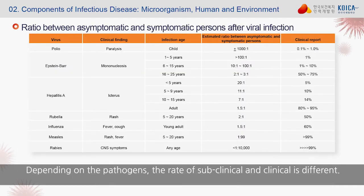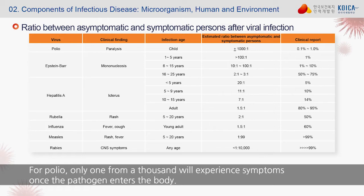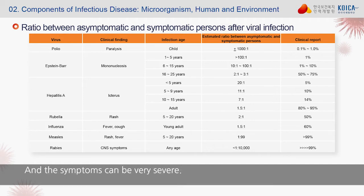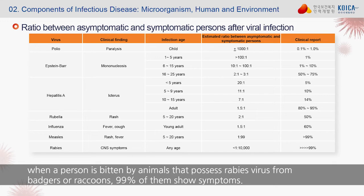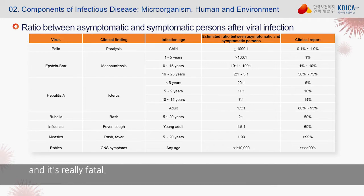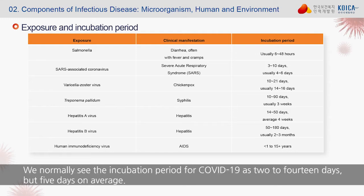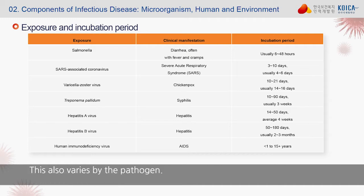Depending on the pathogen, the rate of subclinical to clinical infection differs. For polio, only 1 in 1,000 will experience symptoms once the pathogen enters the body, and those symptoms can be very severe — most don't experience any. However, in the case of rabies, 99% of those bitten by infected animals show symptoms, and it is really fatal. The incubation period also varies: for COVID-19, it is 2 to 14 days, with an average of 5 days. For flu, the incubation period is 1 to 3 days — very short.